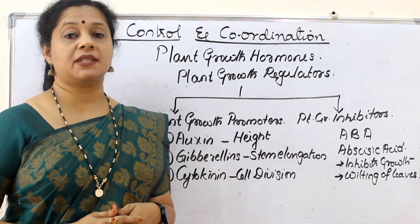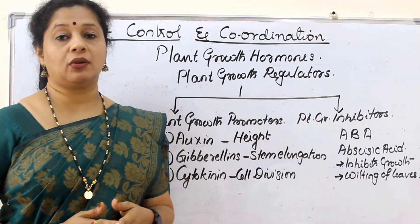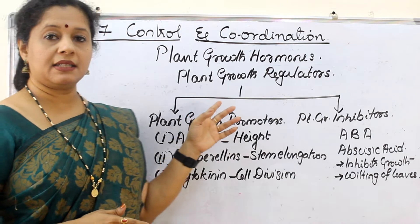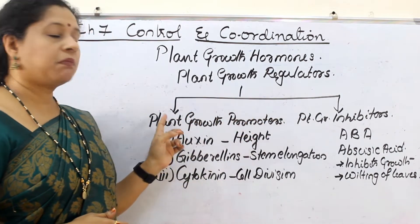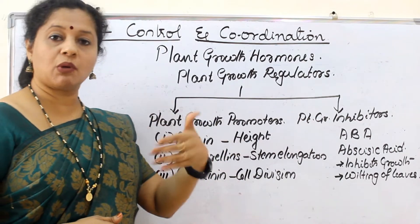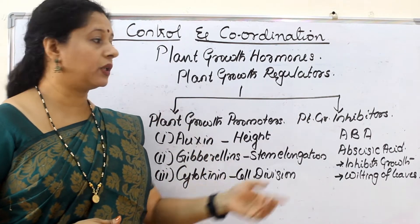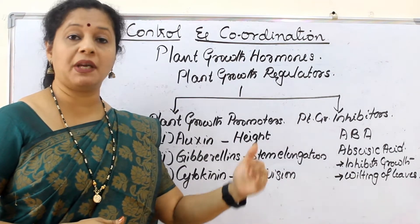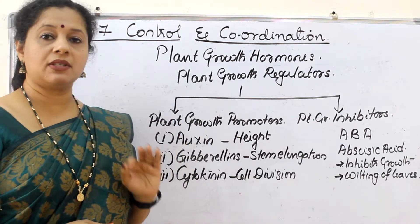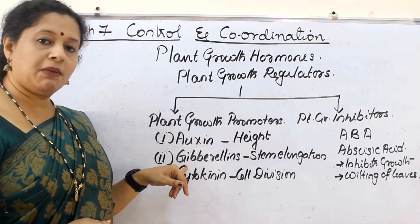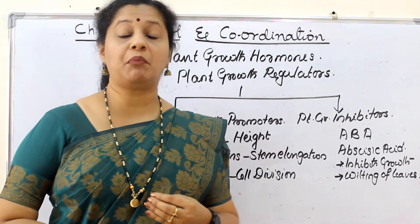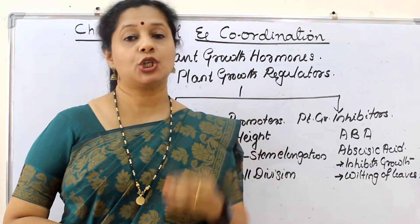Plant growth regulators don't only promote growth — they can sometimes regulate or stop growth as well. We can classify these hormones into two types: plant growth promoters and plant growth inhibitors. Promoters enhance growth, whereas plant growth inhibitors stop or inhibit the growth of plants. In plant growth promoters, we study three hormones: first is auxin, then gibberellins, and cytokinins. Auxin is a hormone present at the tip of the plant — both the root tip and the shoot tip.